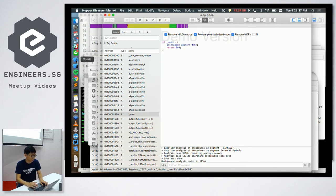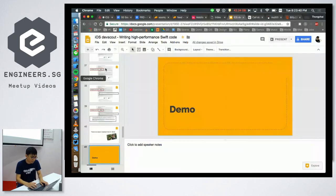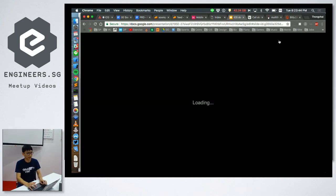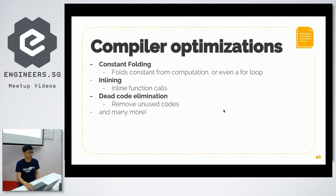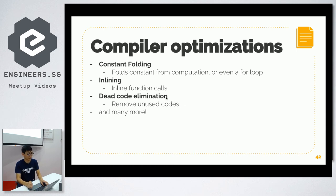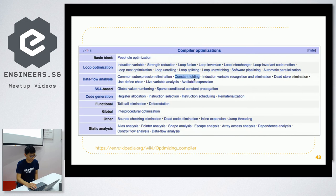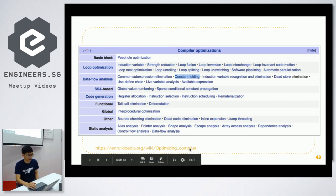So we've seen some examples of compiler optimizations in action: constant folding, inlining, and dead code elimination — which is basically removing unused code if the compiler can detect that some function is not used anywhere. Constant folding is just one of many compiler optimizations happening behind the scenes. You can check out the wiki page if you're interested.